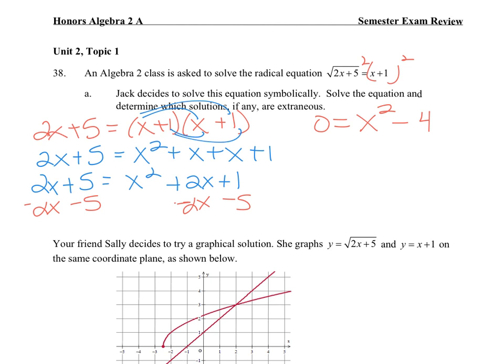So to solve this, I notice I just have the 1 squared variable, so I'm going to add the 4 back over, square root both sides, and we get plus or minus 2. I'm actually going to write them separately because 1 might be extraneous.